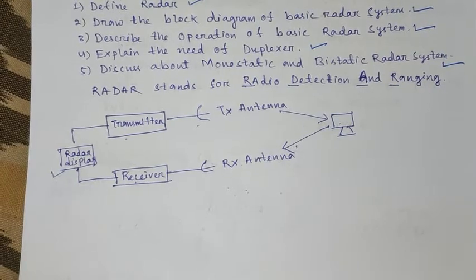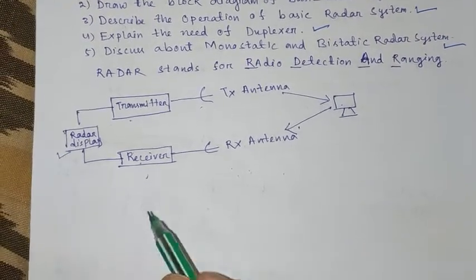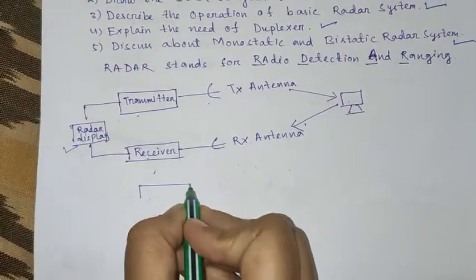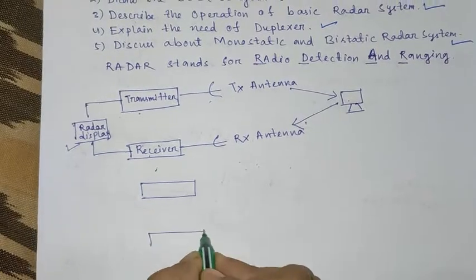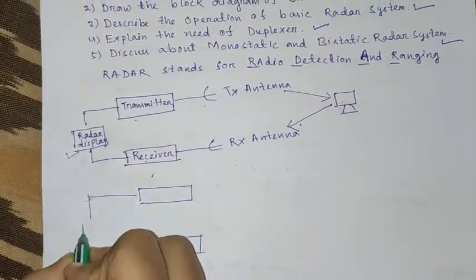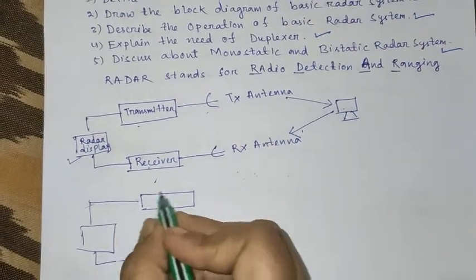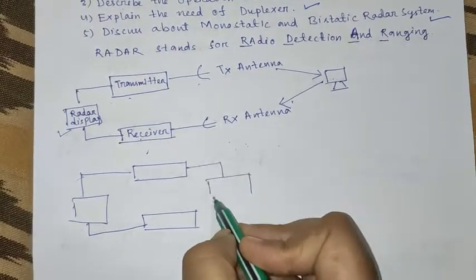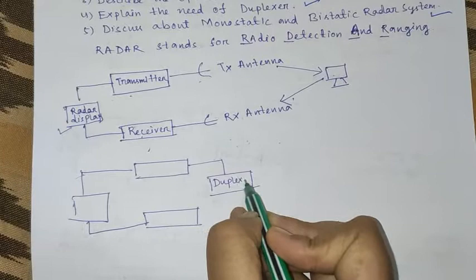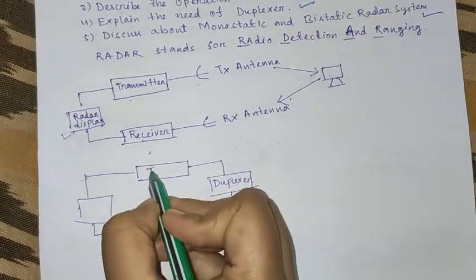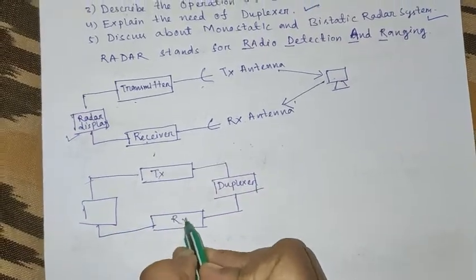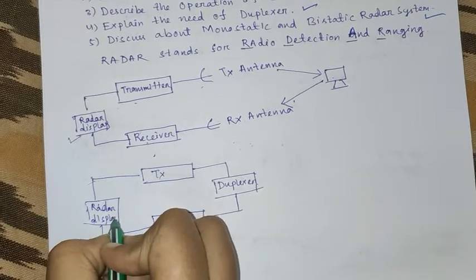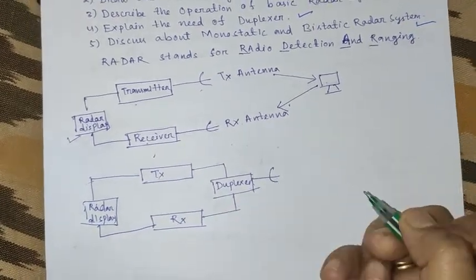The same block diagram we can draw by using a single antenna. The transmitter, receiver, and radar display are the same as the previous one. One extra block is needed, that is the duplexer. Here only one antenna is used.